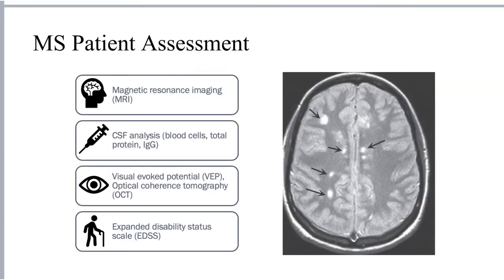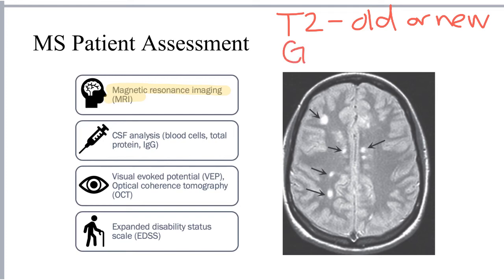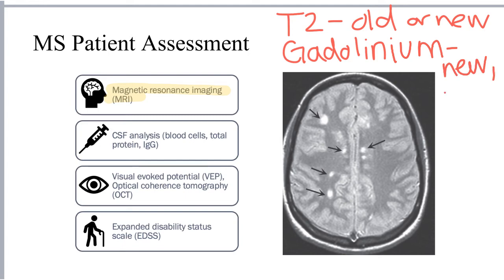The primary imaging modality used to evaluate lesions in patients with MS is magnetic resonance imaging, or MRI. MRI can detect two different types of lesions. The first are called T2 lesions, which are lesions of any age — they can be old or new. Also, using a contrast-enhancing dye called gadolinium, MRI can detect gadolinium-enhanced lesions, which are new, active lesions currently undergoing inflammatory damage. The characterization of a patient's clinical course and severity depends on the number of T2 versus gadolinium-enhanced lesions.